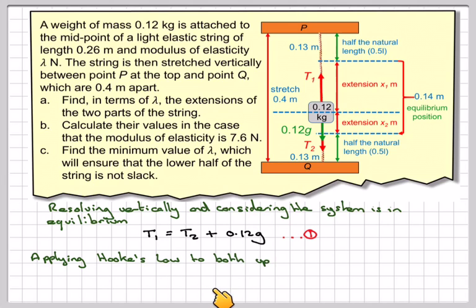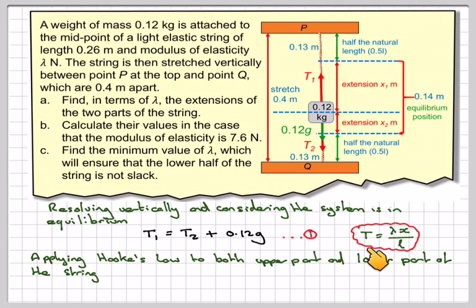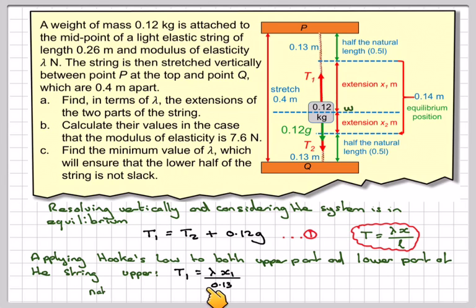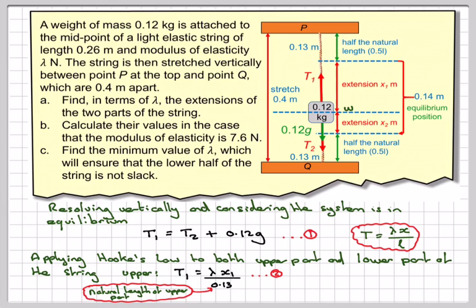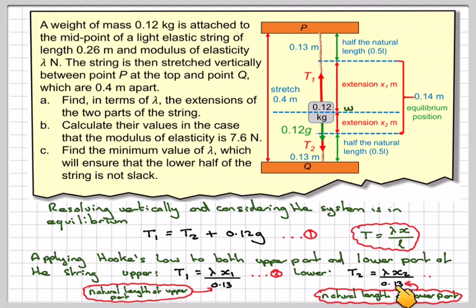Applying Hooke's Law to both parts of the string, where T = λx divided by the natural length. For the upper part, the natural length is 0.13 metres, so T1 = λx1 / 0.13 — call that Equation 2. For the lower part, T2 = λx2 / 0.13, which is the natural length of the lower part. Call that Equation 3.